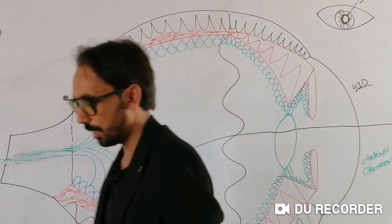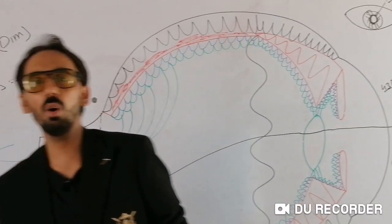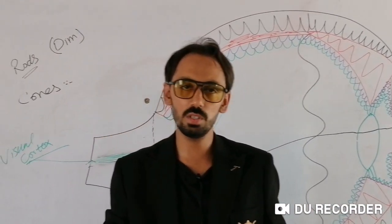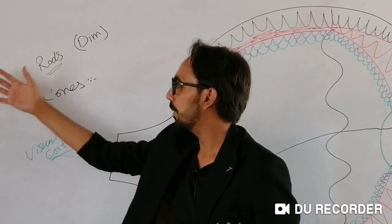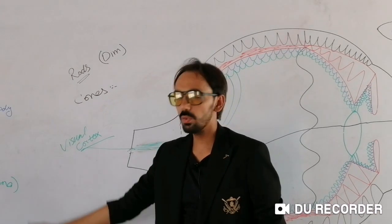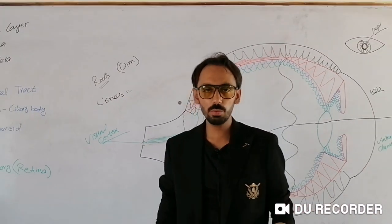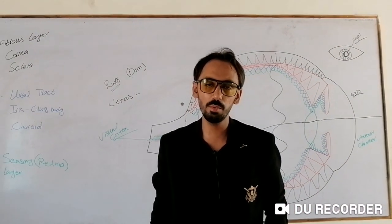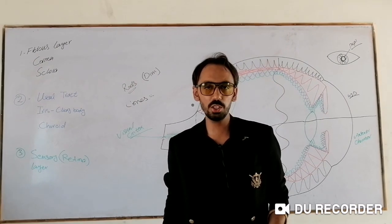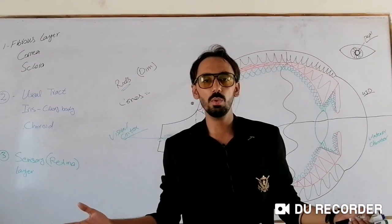We have discussed very briefly all the different structures and parts of the eyeball. In the next lecture, we will discuss the embryology of the eye and will also touch on refraction, distancing, and orthoptics.